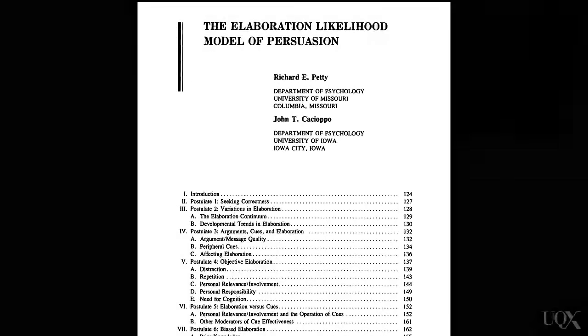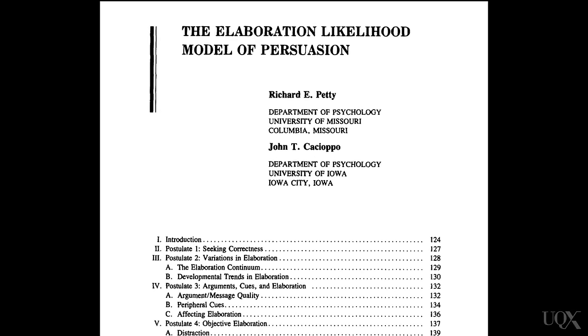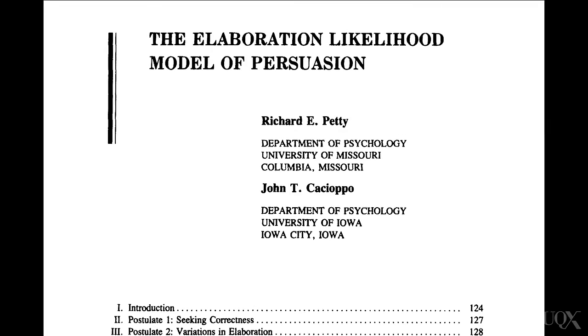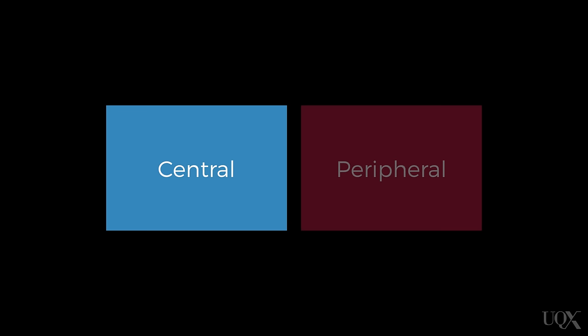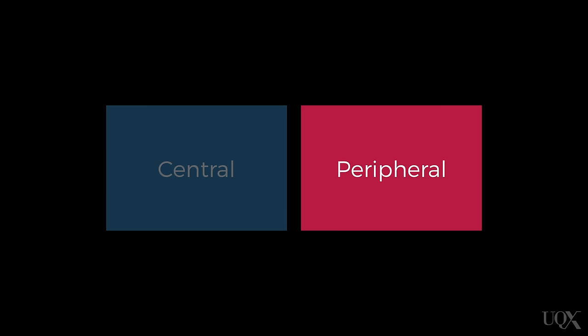According to Petty and Cassiopo in 1986, while there are some fine distinctions between the two models, they generally make the same predictions. So for our purposes, we'll focus on the elaboration likelihood model. This model describes two distinct modes or routes to persuasion — the central and peripheral routes — which involve different amounts of thinking. Attitudes are influenced by different things according to which route is used.